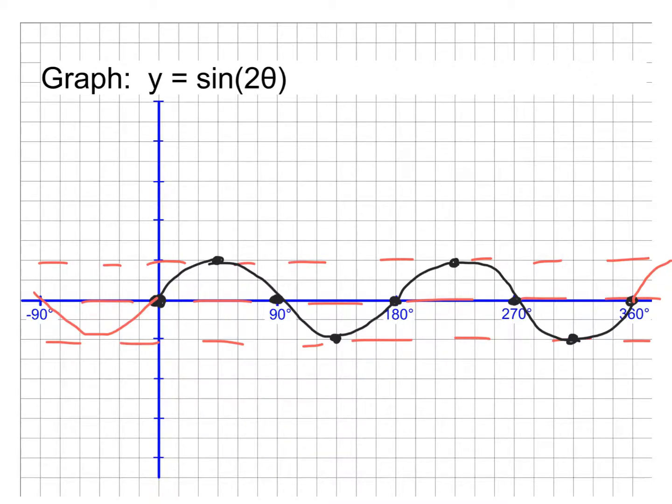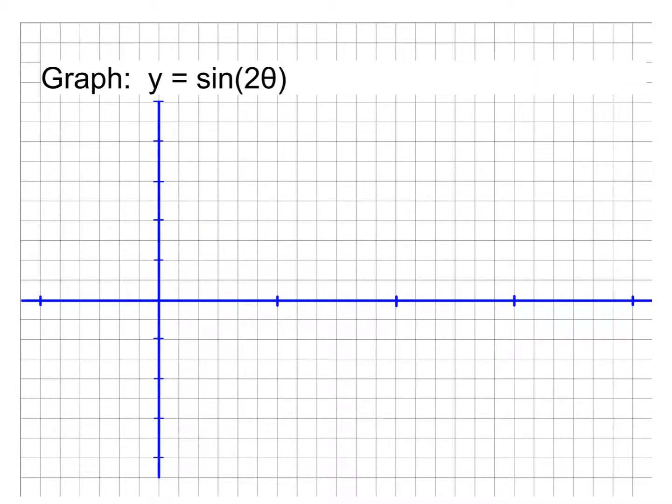So, we start by drawing in those dotted lines. That way, we can focus on knowing where the top, middle, and bottom are from those. Now, we've got to deal with the new stuff. The 2 there. The 2 is changing our graph here. Remember that it made my period to be 180 degrees instead of the normal 360. So, whenever I go over a point, I'm only going to go over half as far.